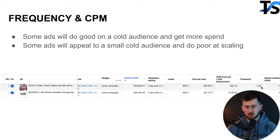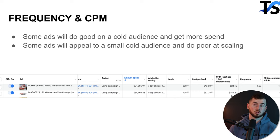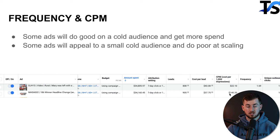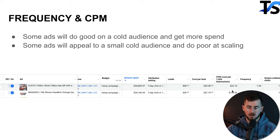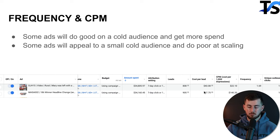Another ad spent $34,000 with a $37 CPL but had much higher frequency and a much higher CPM — because it targets a very specific, smaller group of people. The smaller audience size shows up in the higher CPM and higher frequency. I know the audience is significantly smaller, so we're hammering it — but it's still hitting all our goals from a CPA and CPL perspective, so I don't sweat it.